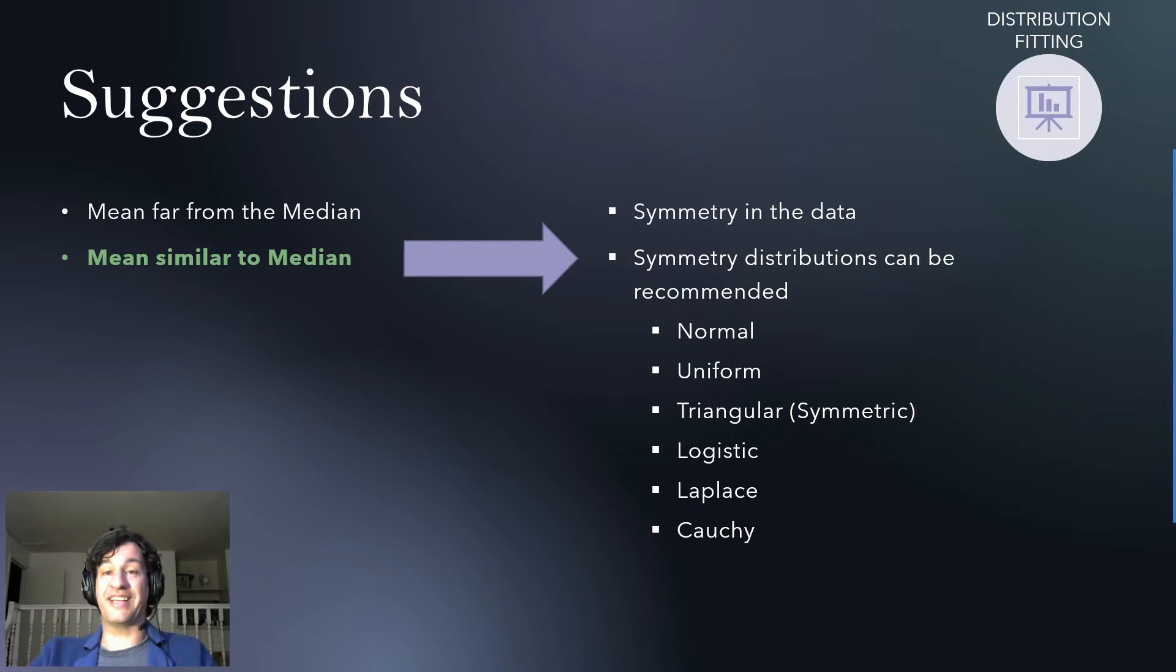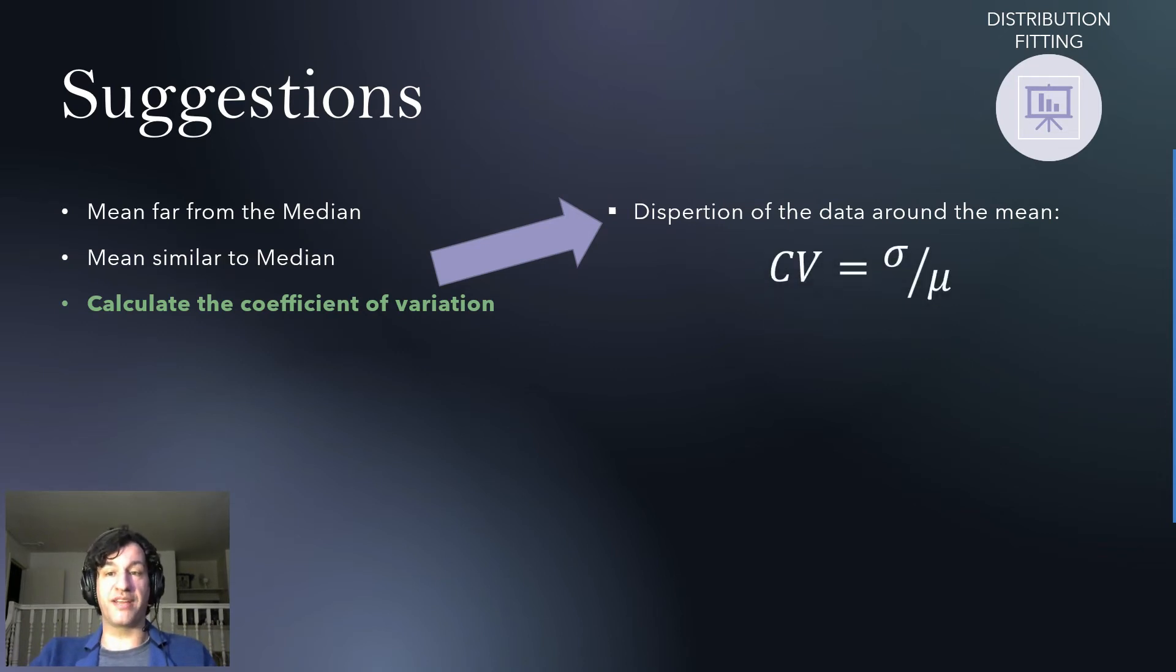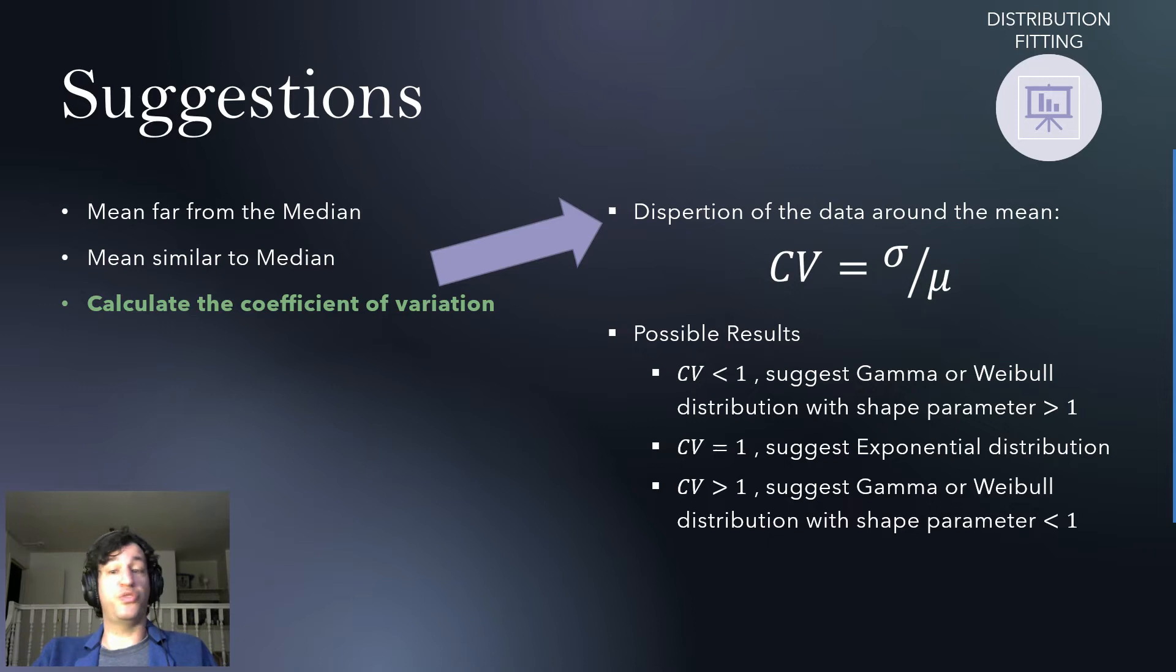Another thing that is important to understand is the coefficient of variation. The coefficient of variation explains the dispersion of the data around the mean. This is important and we'll see why. It's very easy to calculate. You calculate the standard deviation divided by the mean. That's it. So, what are possible results knowing the coefficient of variation? One of them is that if the coefficient of variation is below 1, you might want to use a gamma or Weibull distribution with a shape parameter above 1. If it's equal to 1, you might want to use exponential distribution. And if it's above 1, you might want to use gamma or Weibull distribution with a shape parameter below 1.